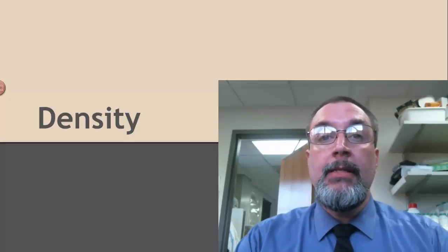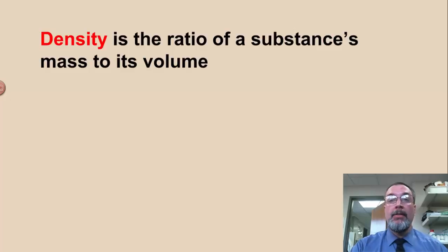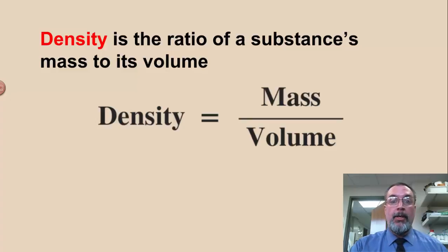Hey, so we're going to talk about density. Just some basic stuff that you should know about density. Density is a ratio of a substance's mass to its volume. So we can write it as density equals mass over volume, or simply d equals m over v.